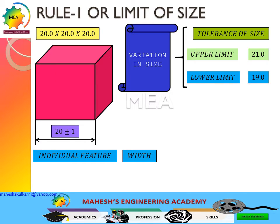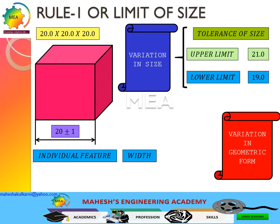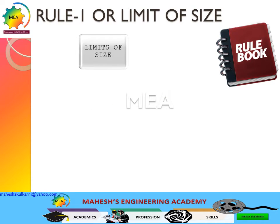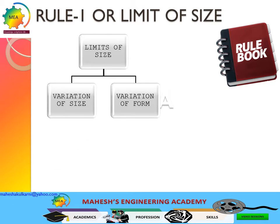The second part of Rule Number One is variation in geometric form — that means variation in straightness, flatness, circularity, and cylindricity. This rule is also known as the Envelope Principle. To summarize, Rule Number One has two parts: variation of size, which is controlled by the size tolerance of the feature of size, and variation of form.